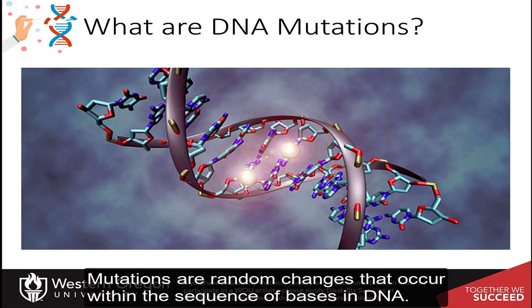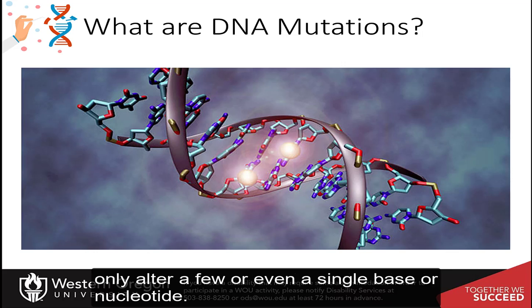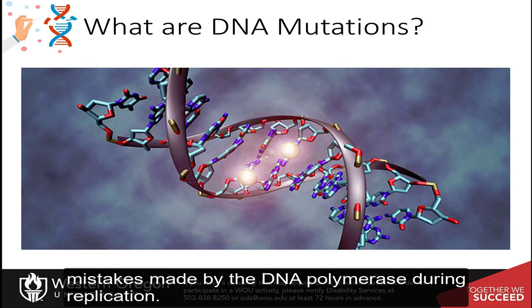Mutations are random changes that occur within the sequence of bases in DNA. They can be large-scale, altering the structure of the chromosomes, or small-scale, where they only alter a few or even a single base or nucleotide. Mutations can occur for many reasons. For example, DNA mutations can be caused by mistakes made by the DNA polymerase during replication.